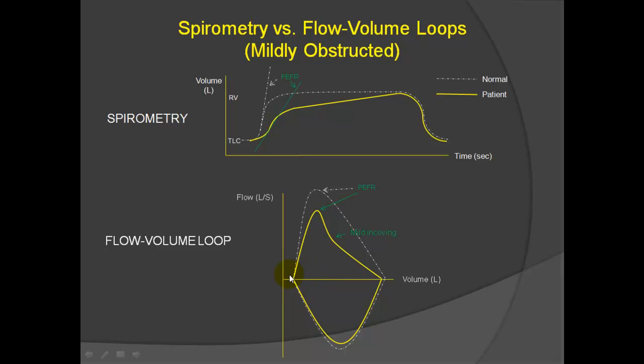In mild obstruction, the volume is preserved. In this axis is the volume, so what this graph is showing is what is the flow at each lung volume. At high lung volumes, the flow is reduced. At mid lung volumes, the flow is quite reduced, but the total volume from total lung capacity over here to residual volume in mild obstruction is preserved.